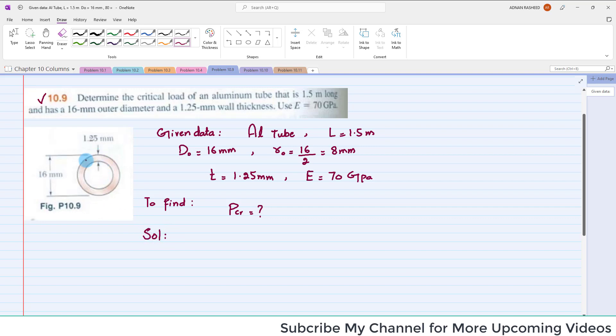As it is given, this is the cross-section of the aluminum tube, and this tube is 1.5 meters long. This is acted upon by a centric axial load, and we have to find this P critical.